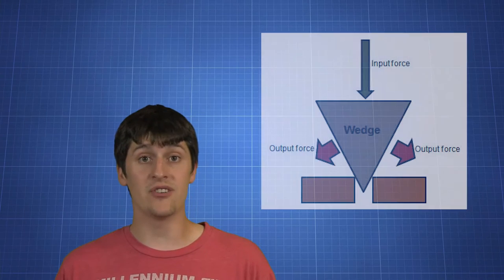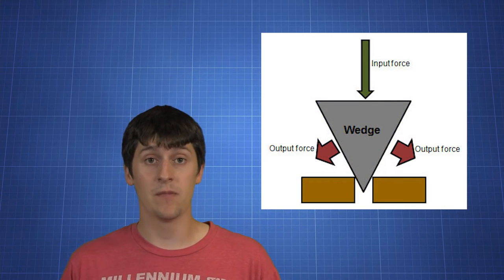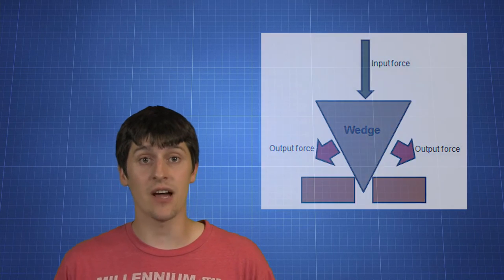Because a wedge is just like a moving incline plane we can use the same equations to calculate IMA and AMA for a wedge.